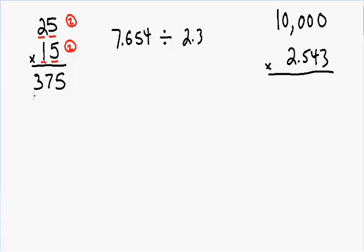That means we can use the 3 and the 7, and the third digit 5 we use for rounding. If it's 5 or greater, then we round up. So the 7 becomes an 8 and we have a final answer of 380.